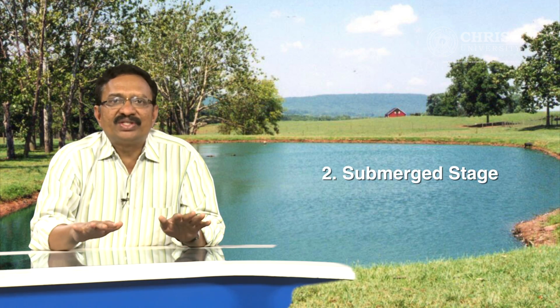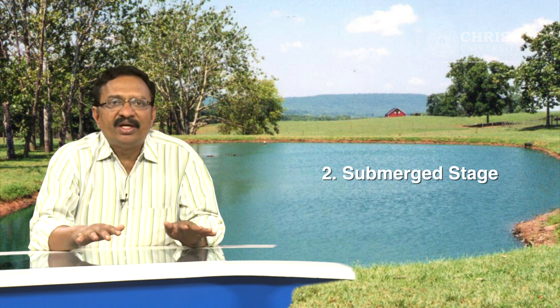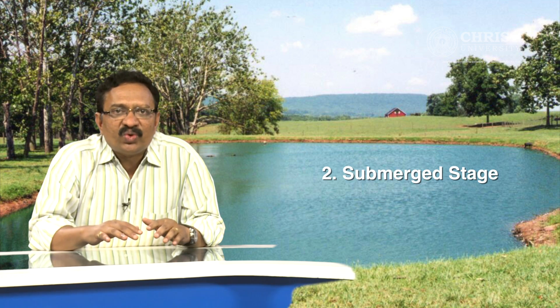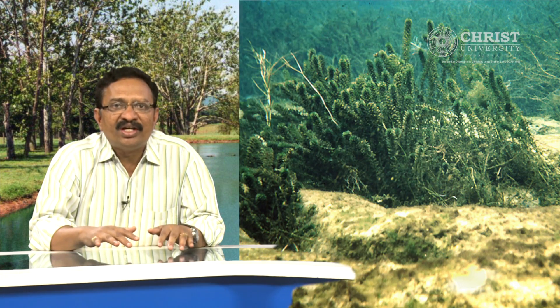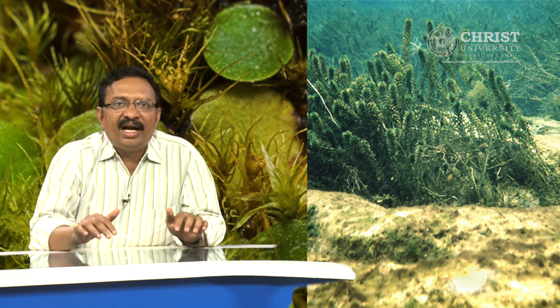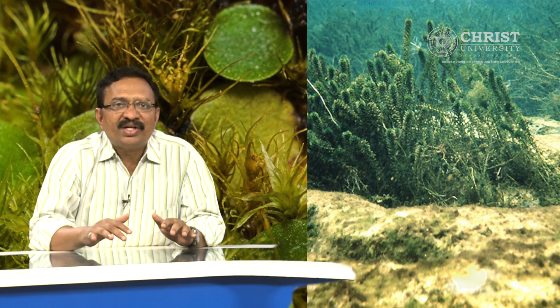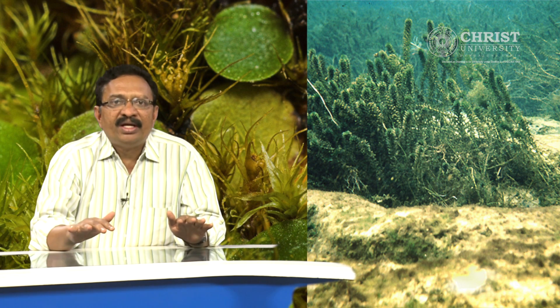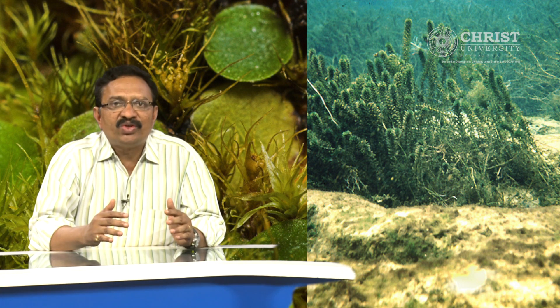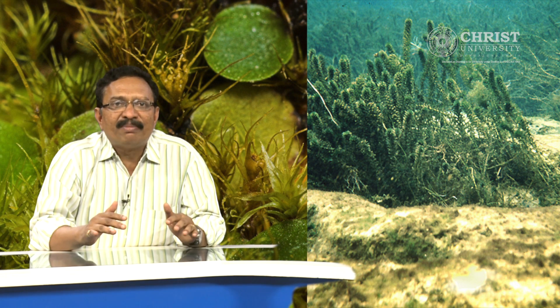The second stage is the submerged stage. The soft mud mixed with organic matter favors the growth of submerged plants like Hydrilla, Utricularia, etc. They are rooted in the mud and fill the water. Accumulation of silt and sand around the plants makes the water body shallower. Death and decay of submerged plants enrich the newly formed soil with humus, making the area less fit for submerged plants and more suitable for the next stage.